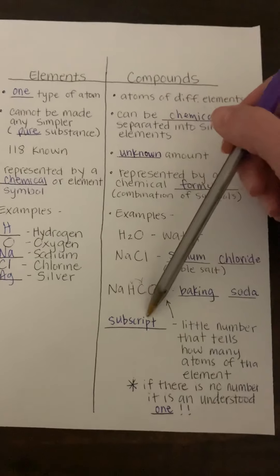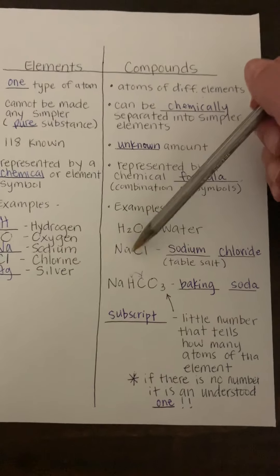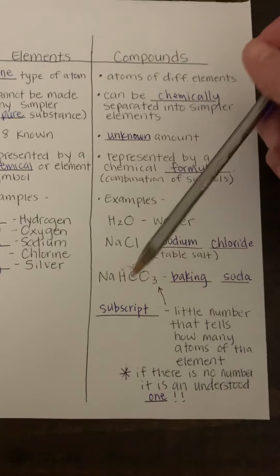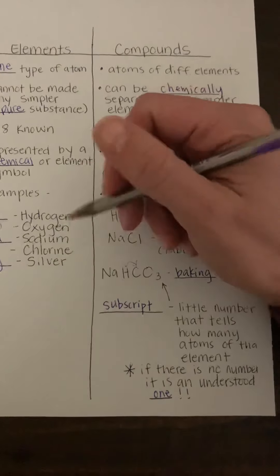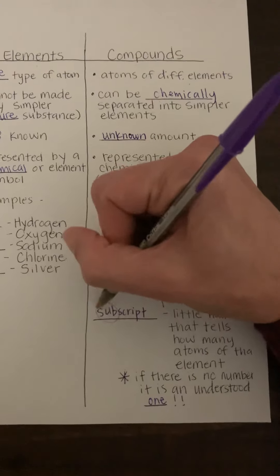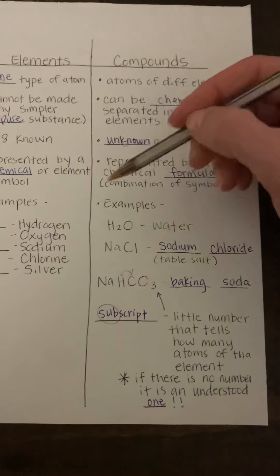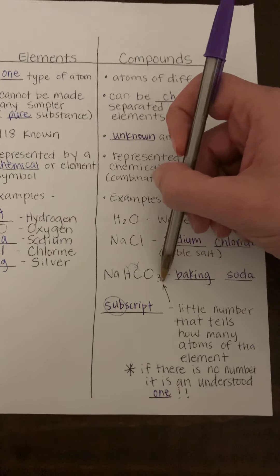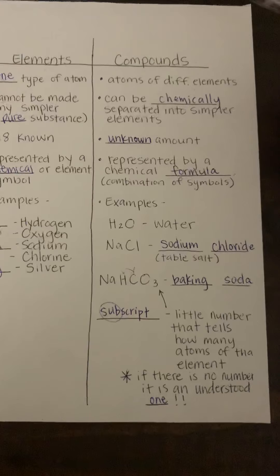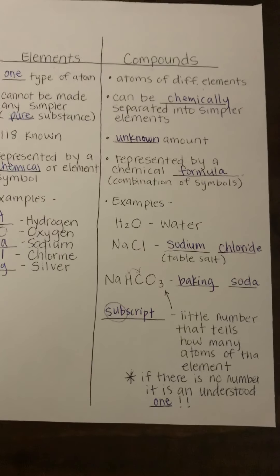All right, so now let's look at what these little numbers here. You probably see these little numbers right here, and some of them don't have numbers. So these little numbers are called a subscript. Now, if you think of the word 'sub,' that means below or under, like a subway. So anytime you see little numbers that are written below or under,